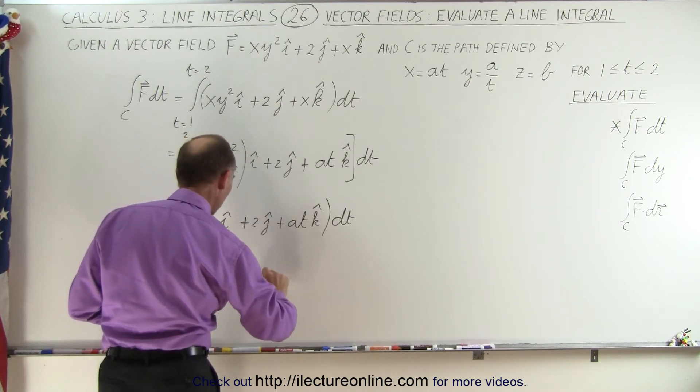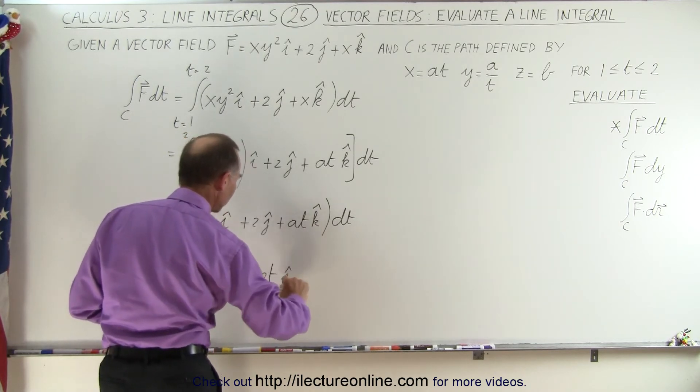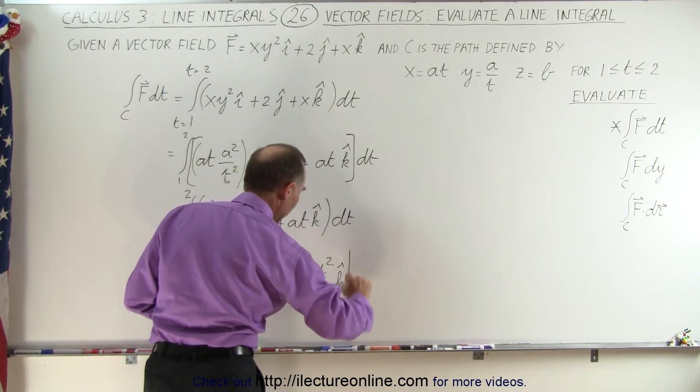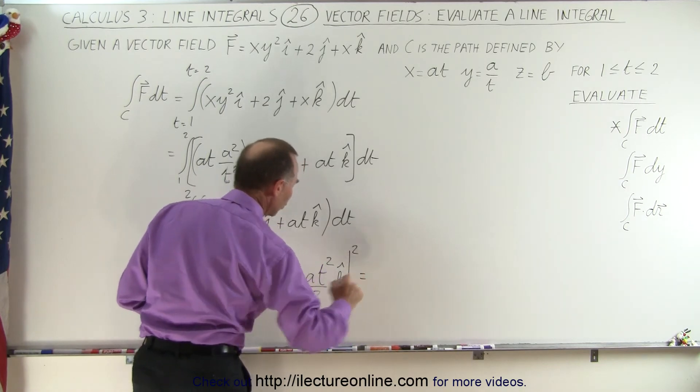So this becomes plus 2t in the j direction, and this is plus at² over 2 in the k direction, and the whole thing evaluated from 1 to 2.